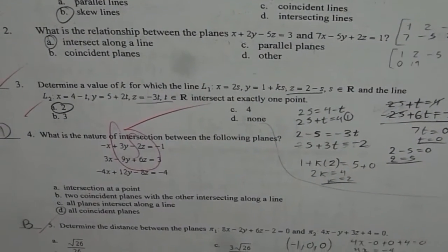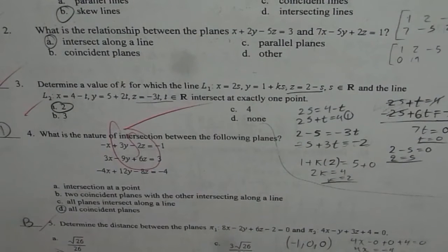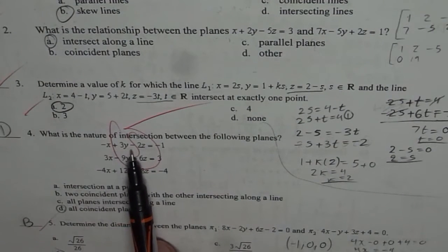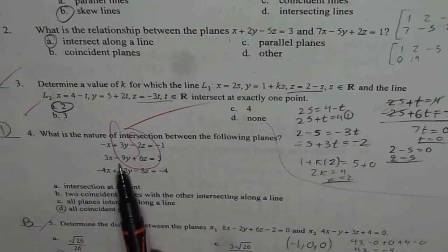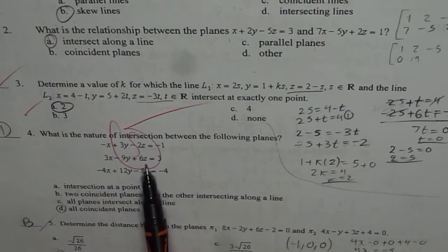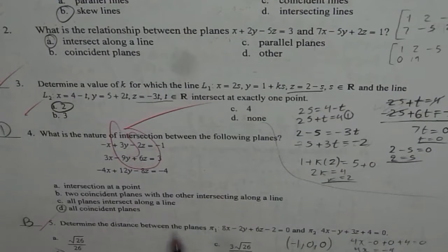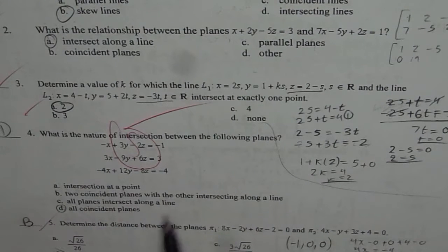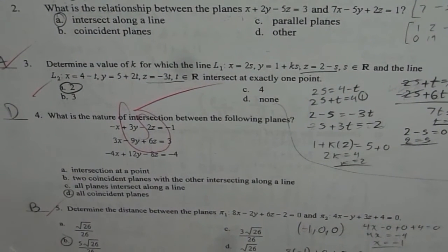Now let us look at questions 4 and 5. Question number 4: what is the nature of intersection between the following planes? −x + 3y − 2z = −1, 3x − 9y + 6z = 3, and −4x + 12y − 8z = −4. The four choices are: intersection at a point, two coincident planes with the other intersecting along a line, all planes intersect along a line, or all coincident planes.